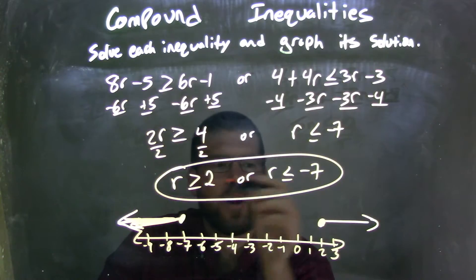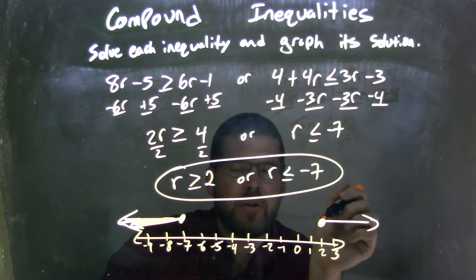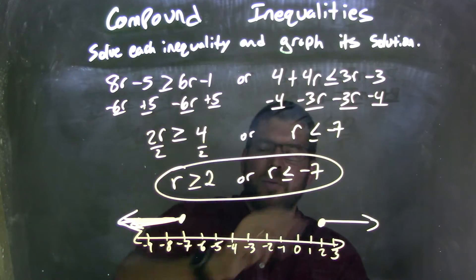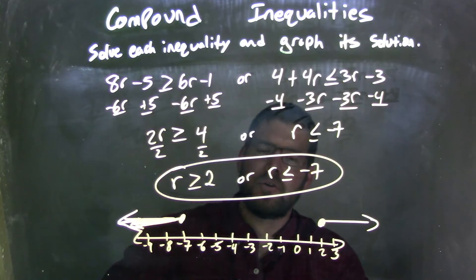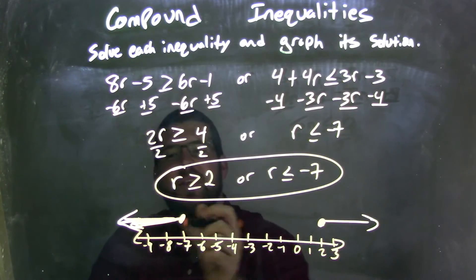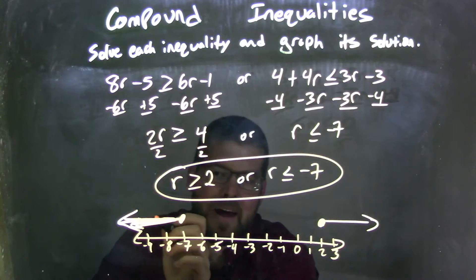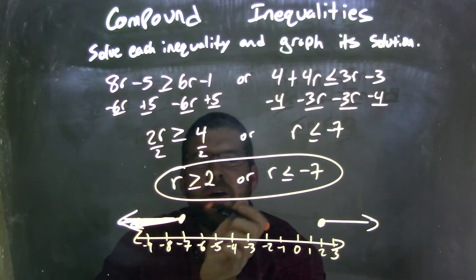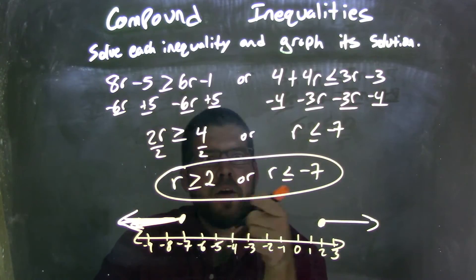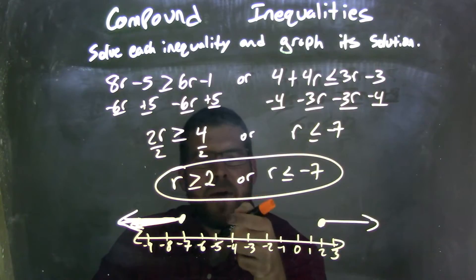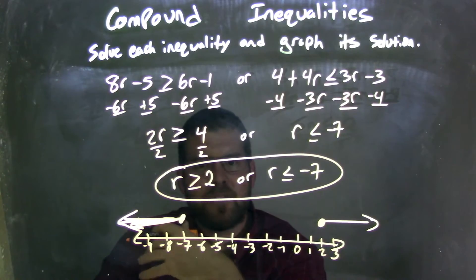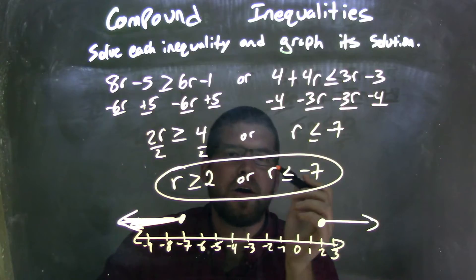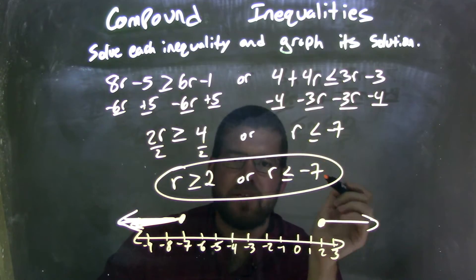So now I need to graph it. R can equal 2, so I have a closed circle, and r is greater than 2, so I put my arrow to the right. R can equal negative 7, closed circle at negative 7, and my arrow goes to the left because r is also less than negative 7. So now I have my graph that matches my final answer, which is r is greater than or equal to 2, or r is less than or equal to negative 7.